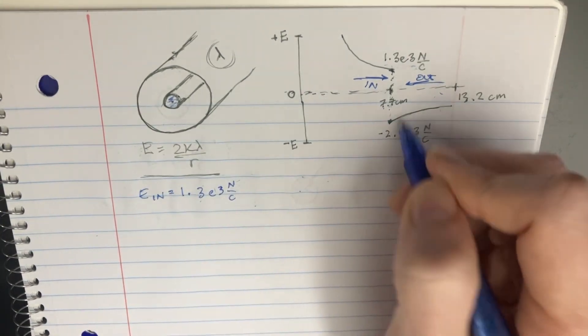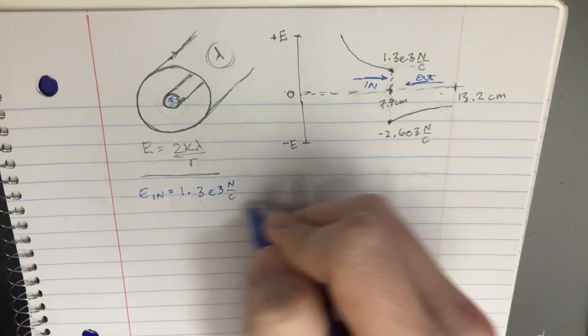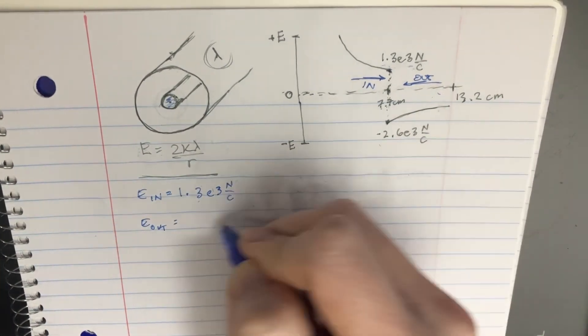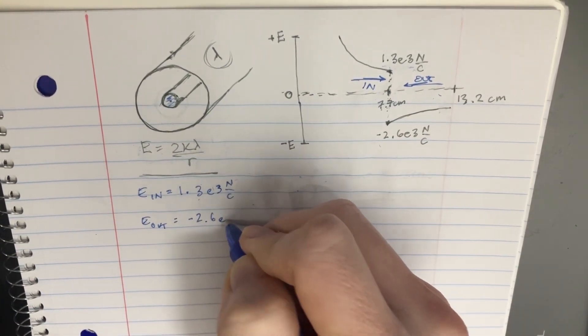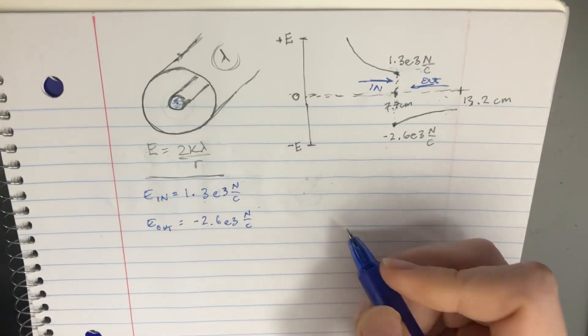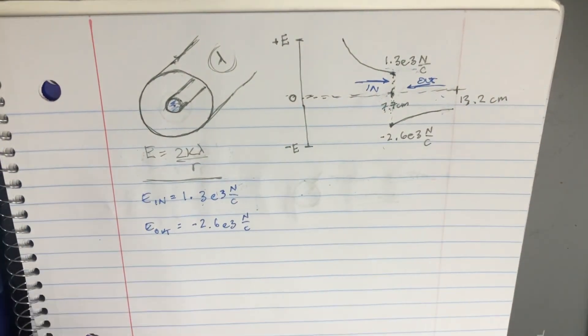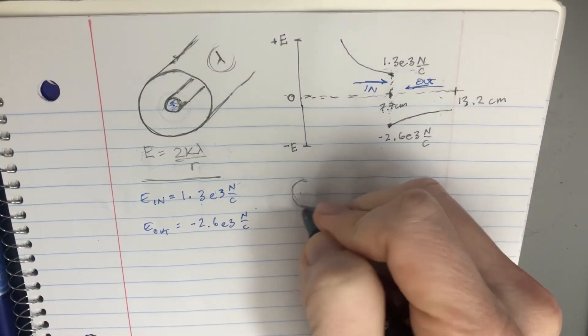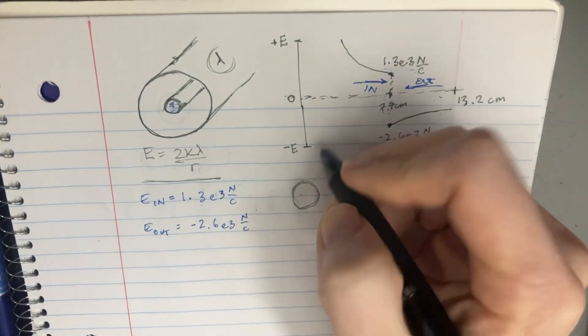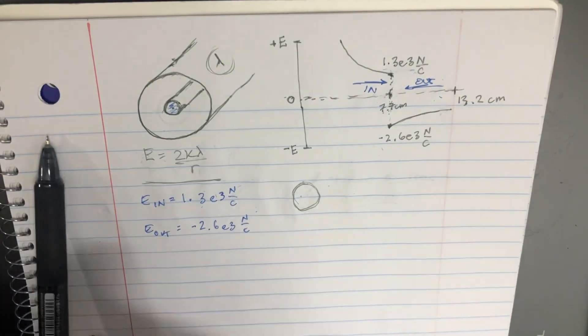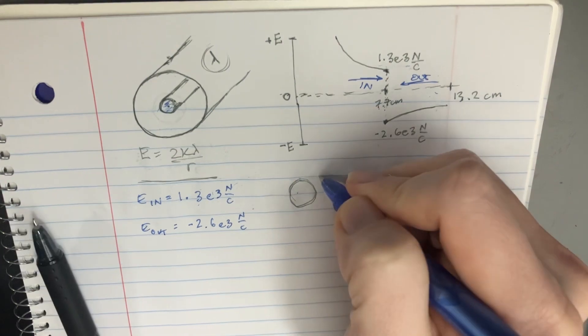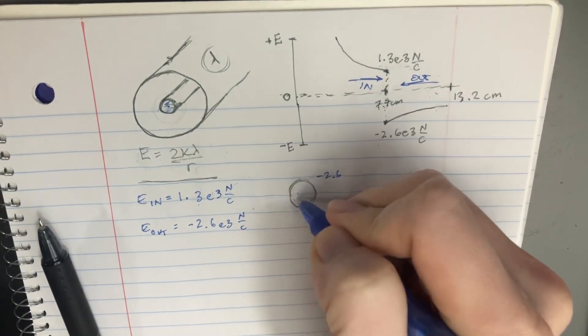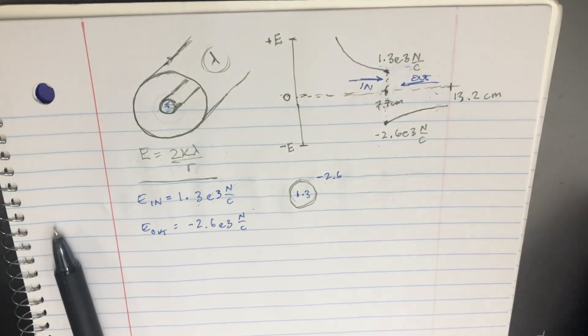And then we also know that the electric field on the outside is supposed to be negative 2.6 e to the third Newtons over Coulombs. And on the outside we have negative 2.6, and on the inside we have 1.3. We're going to ask ourselves, what's the difference between those two?